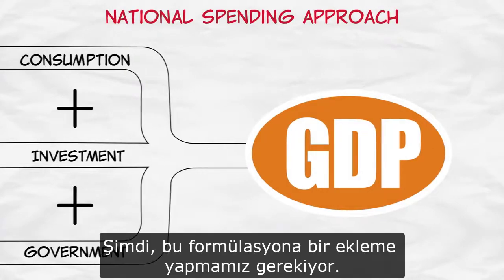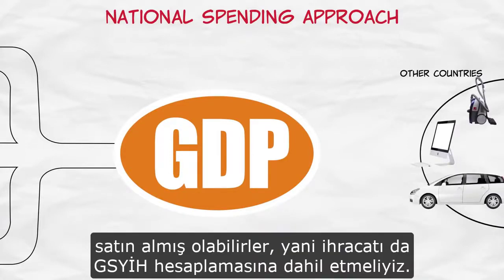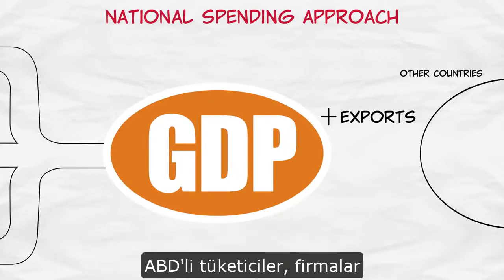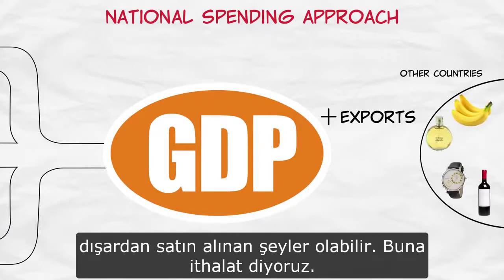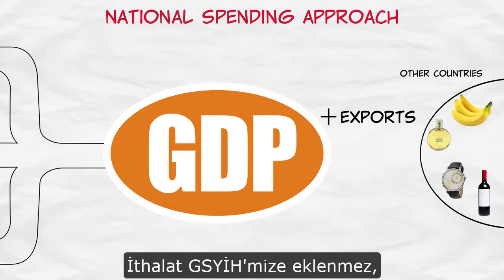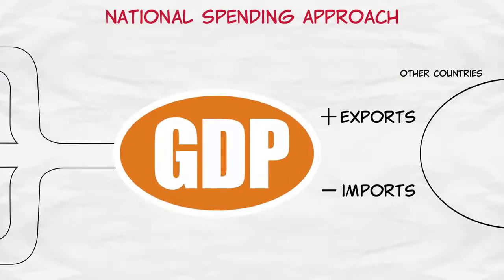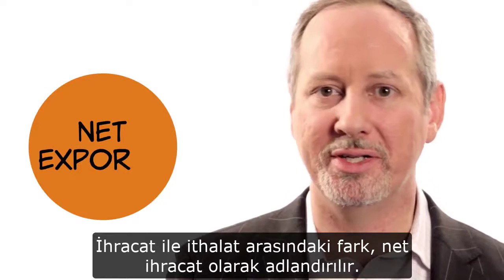We then need to make one correction. People in other countries might also have bought some of our goods, so we add exports. On the other hand, some of what we've counted already — some of what was bought by U.S. consumers, businesses, or governments — was purchased from abroad. Imports don't add to our GDP, so we want to subtract imports. Exports minus imports is sometimes also called net exports.